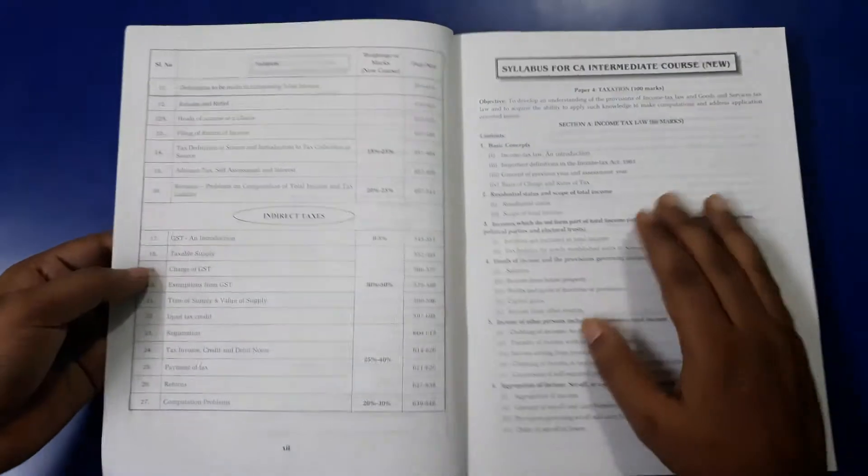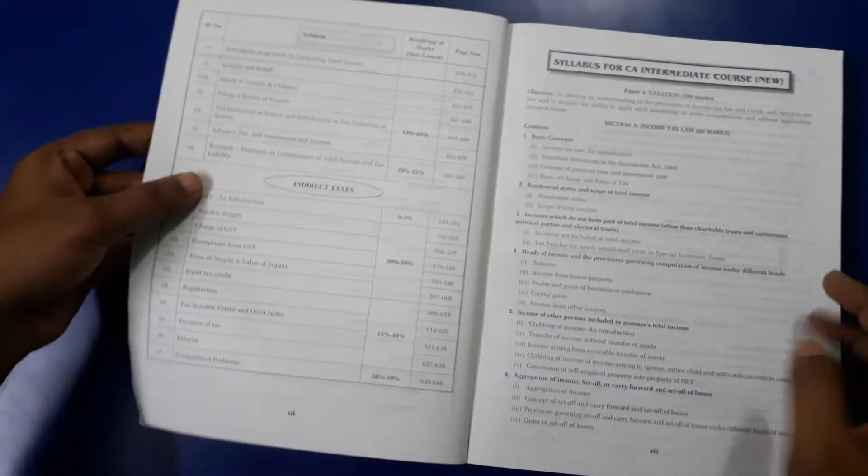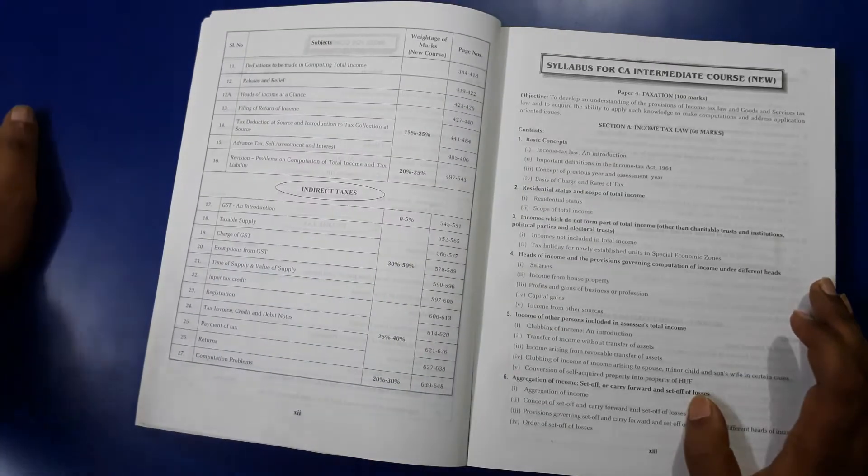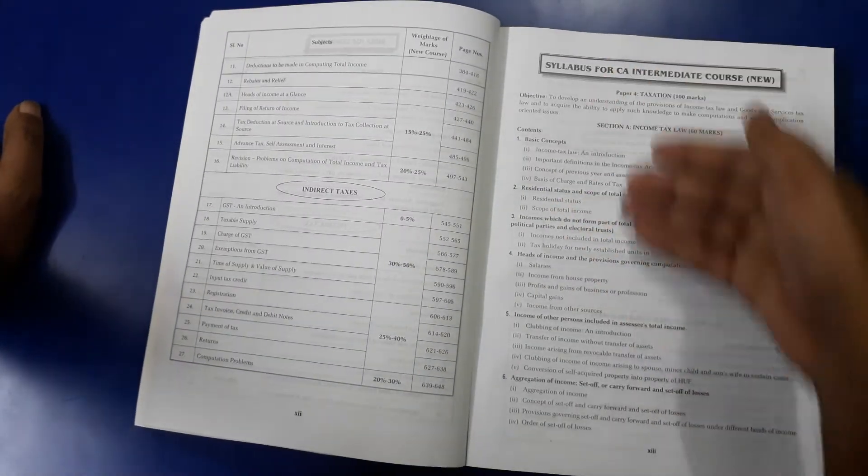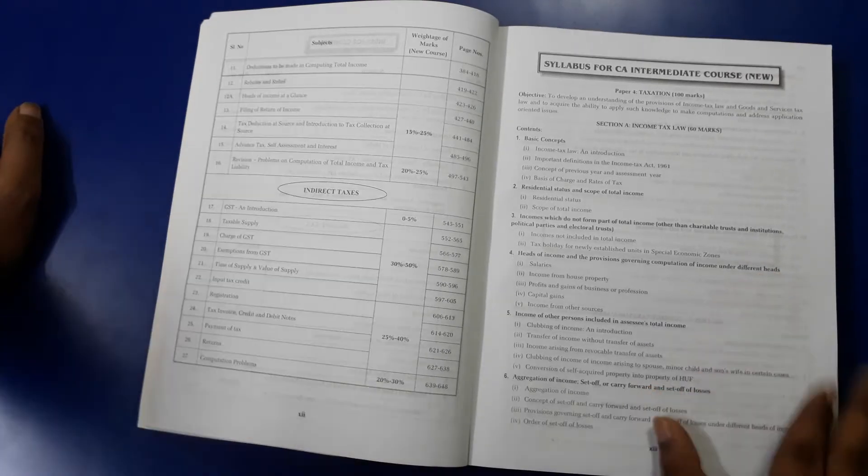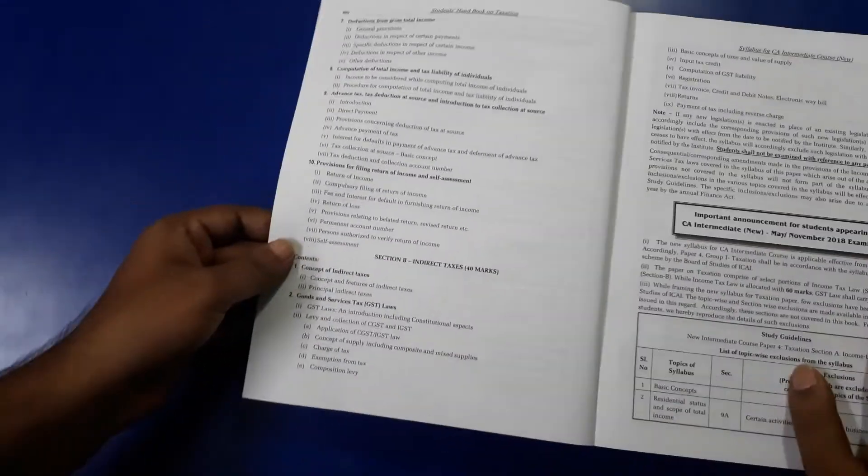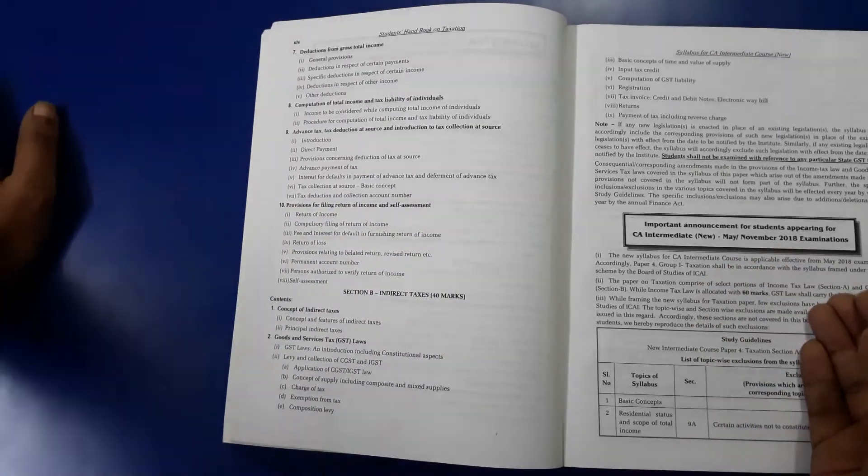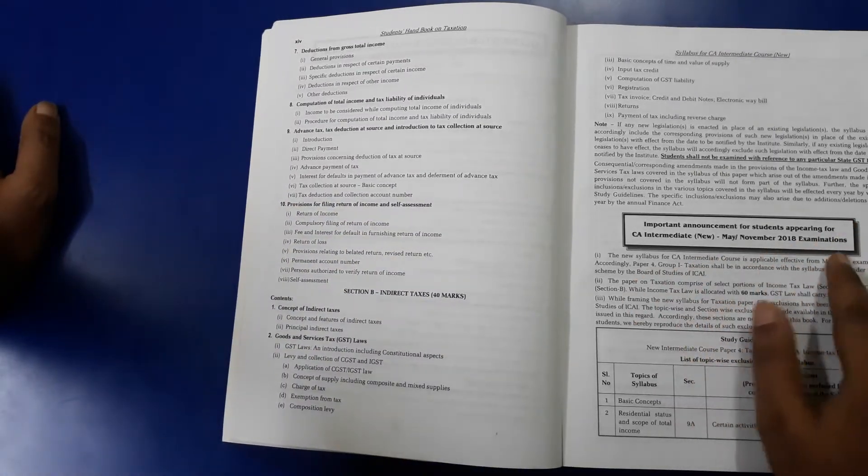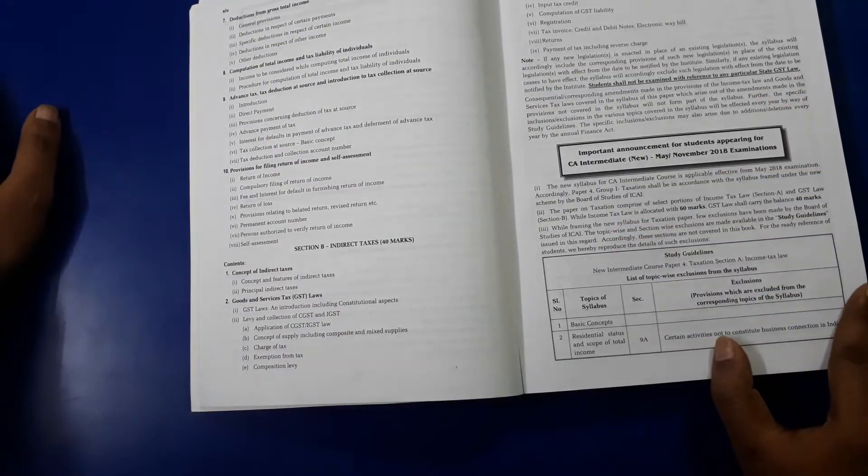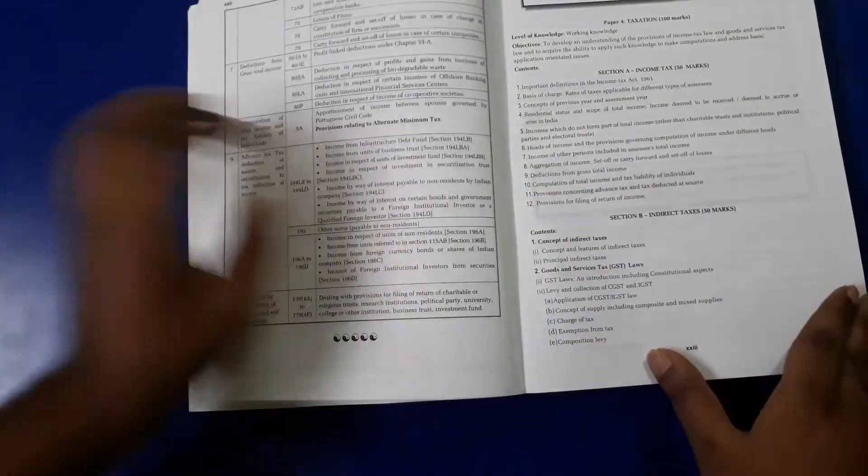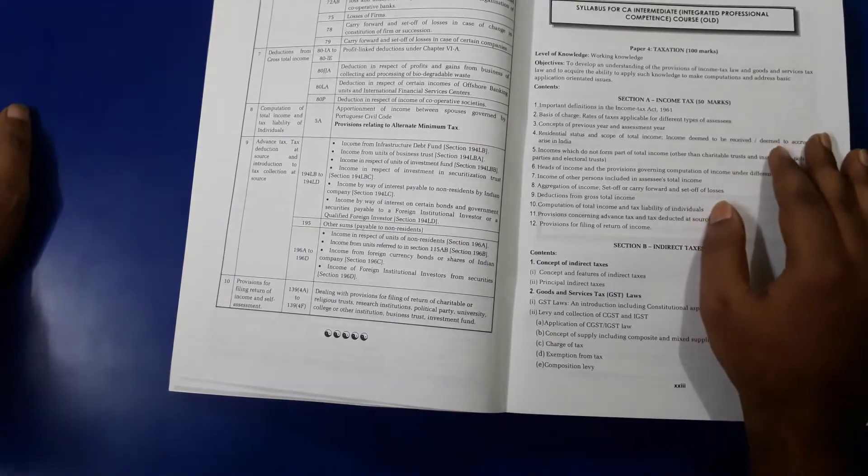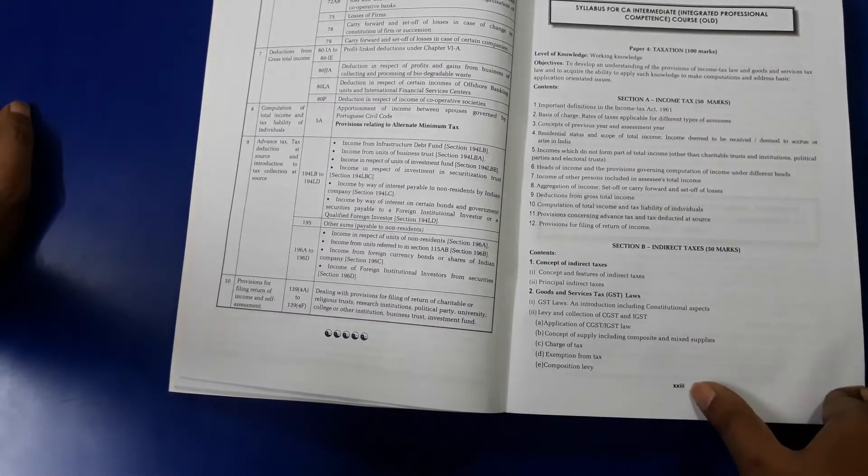These are the indirect tax part and this is the direct tax part. Here you will see syllabus for CA Intermediate course, so he has described the syllabus which is applicable for you. After this, there are important announcements for students appearing for CA Intermediate November 2018. He has also discussed what is important for you, and afterwards you will see the syllabus for CA Intermediate old course.